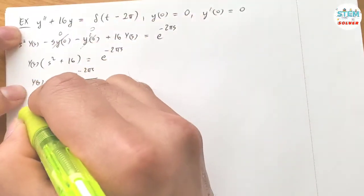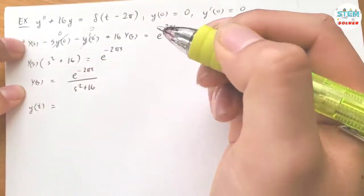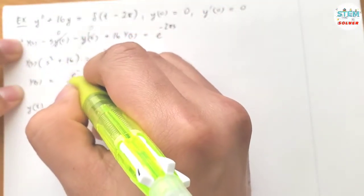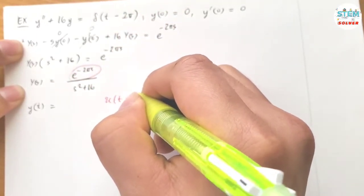Then take the L inverse on both sides, so this one, I have u of t minus 2π.